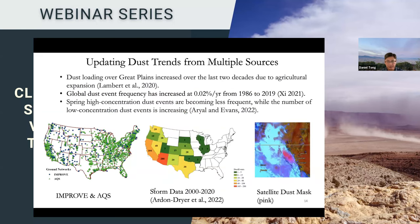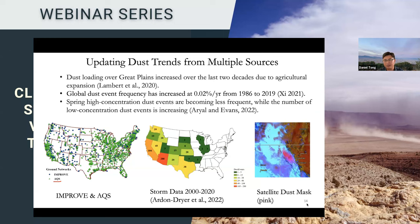Right now, several groups are working together to build updated dust trends from multiple sources, including IMPROVE. We're also trying to develop a new dataset from EPA's Air Quality System routine monitoring network, which has far more monitors but only total PM2.5 and PM10, sometimes with wind speed. We also look at storm events data, which is reported by citizen scientists — not rigorous for long-term trends, but useful for verification. Satellite datasets have the problem that satellite missions are typically not long enough to detect long-term trends, which is an issue the community must address.